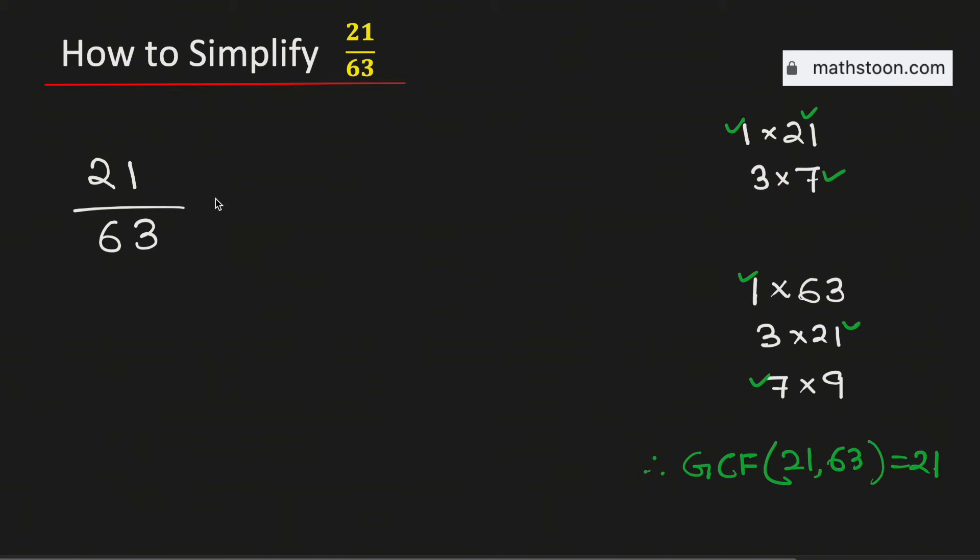Now to simplify this fraction, we will divide both 21 and 63 by their greatest common factor, which is 21.